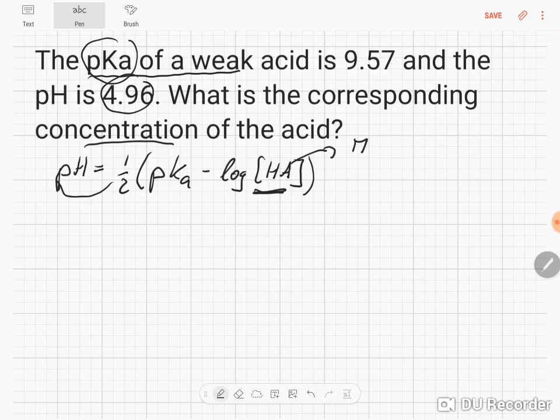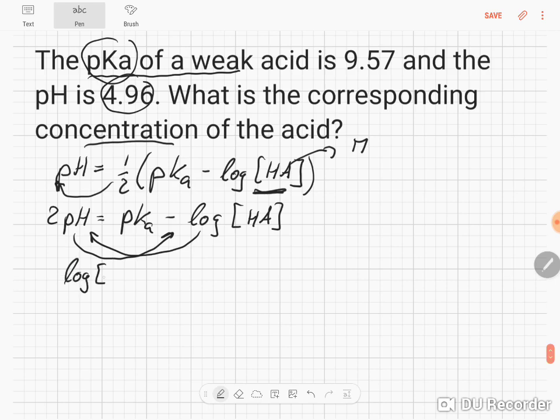We bring that to the other side. So we've got 2 times pH equals pKa minus log of the acid here. Now we can bring that to that side with plus and this to this side, and we get log of the acid concentration equals pKa minus 2 times the pH.